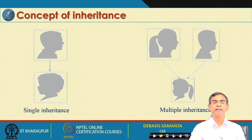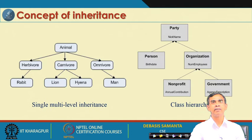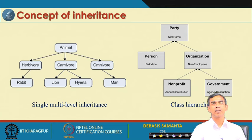Multi-level inheritance means children inherit from the parent, grandchildren inherit from the children, and so on. These are very common concepts, and as far as objects are concerned, the same concept applies there as well.